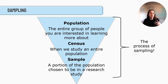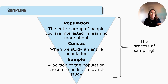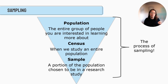If we want to study veterans who've experienced PTSD, it would be really difficult to study the entire population. So instead what we do is we often look at a sample, which is a portion of the population chosen to be in a research study. This process of narrowing down from the larger population to a representative sample is called sampling.